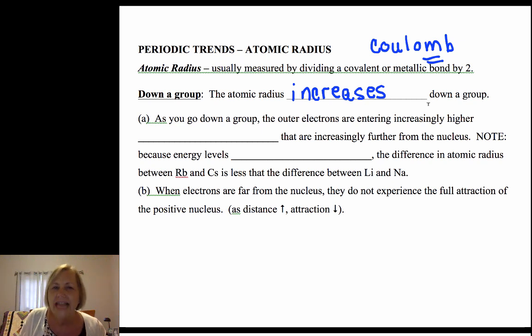As you go down a group, electrons are entering increasingly higher energy levels. Remember, the energy level is given by the quantum number n.